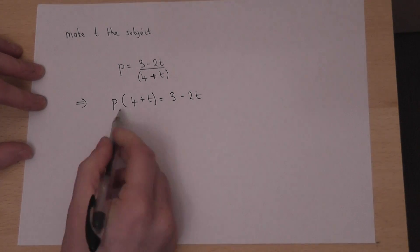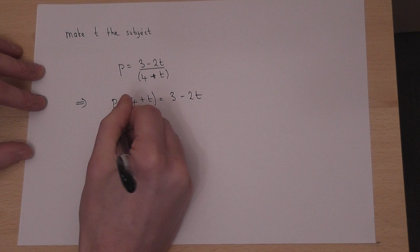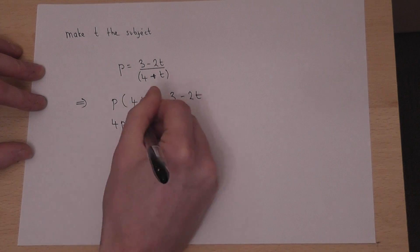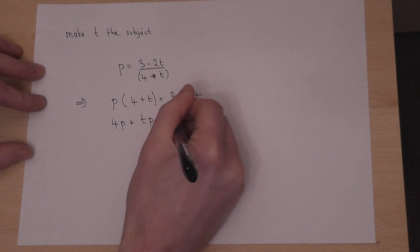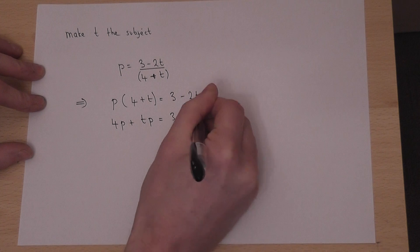The next step is to expand the bracket. So 4p plus tp equals 3 minus 2t.